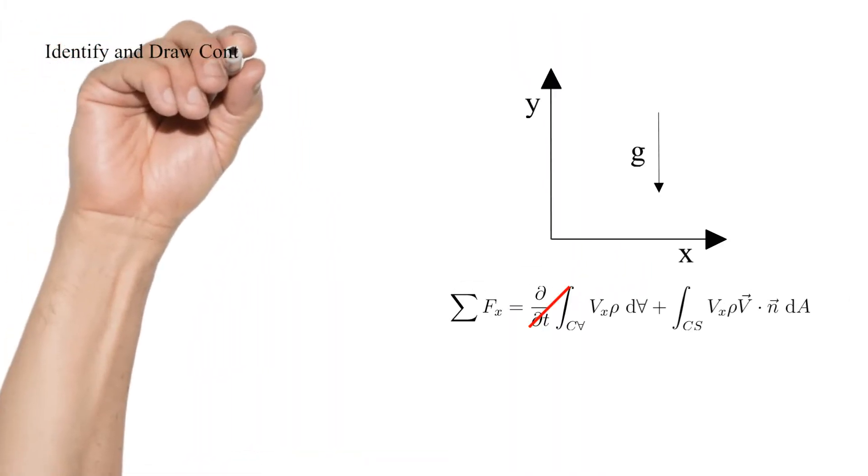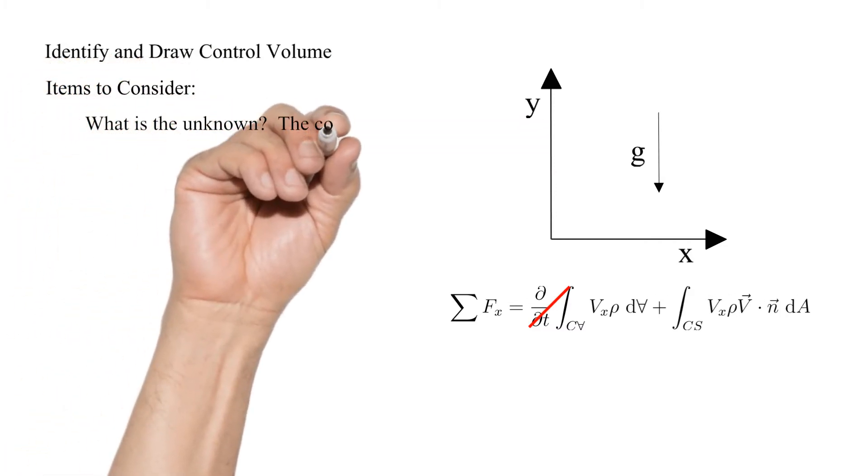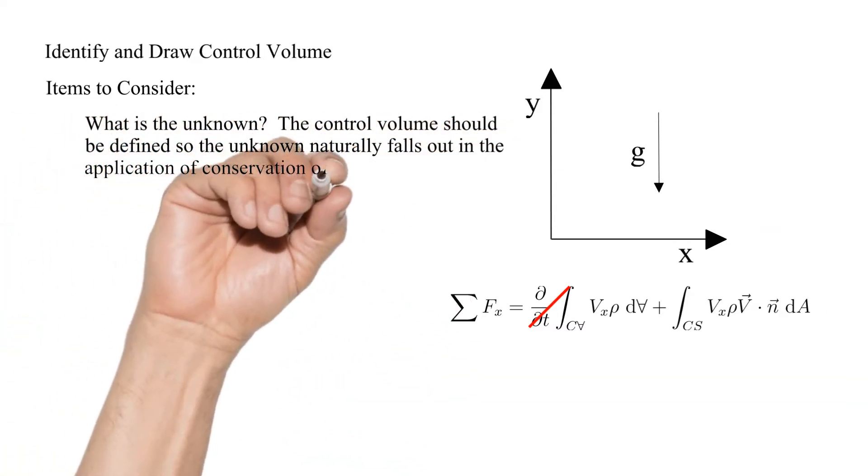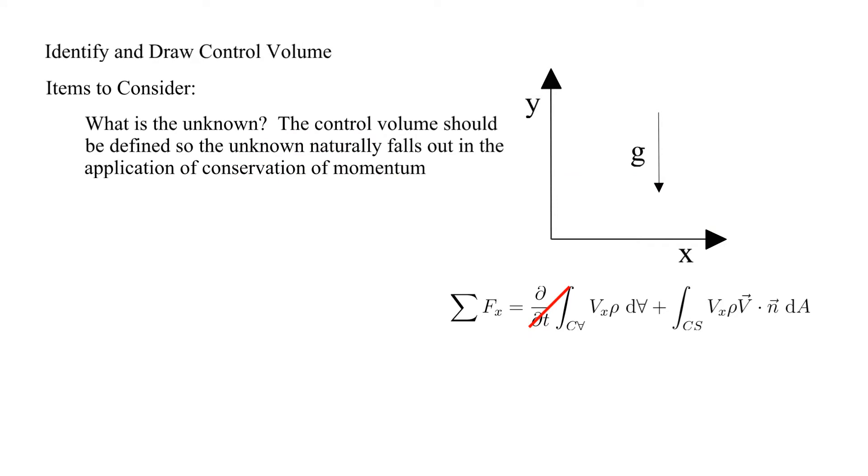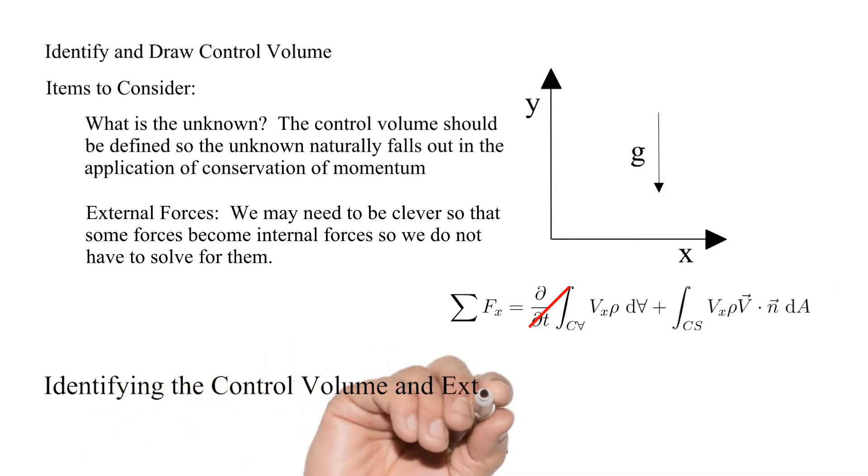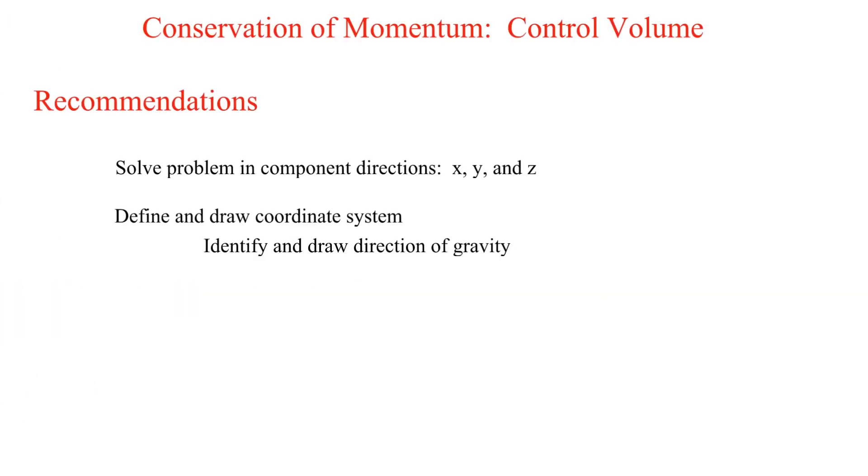Next we need to define and draw the control volume. There are several things to consider. What is the unknown? The control volume should be defined so the unknown naturally falls out in the application of conservation of momentum. External forces: we may need to be clever so that some forces become internal forces so we do not have to solve for them. Be aware that identifying the control volume and external forces may need to be done in unison.